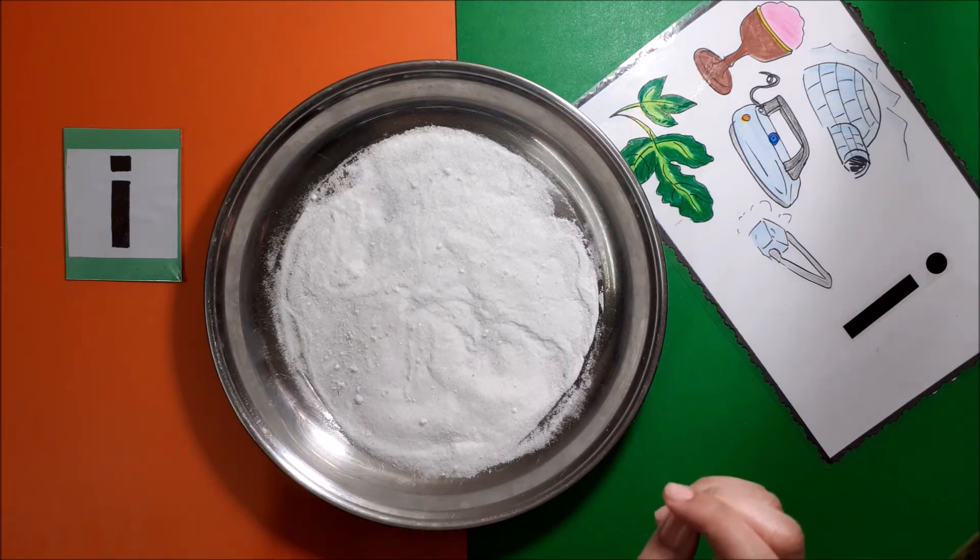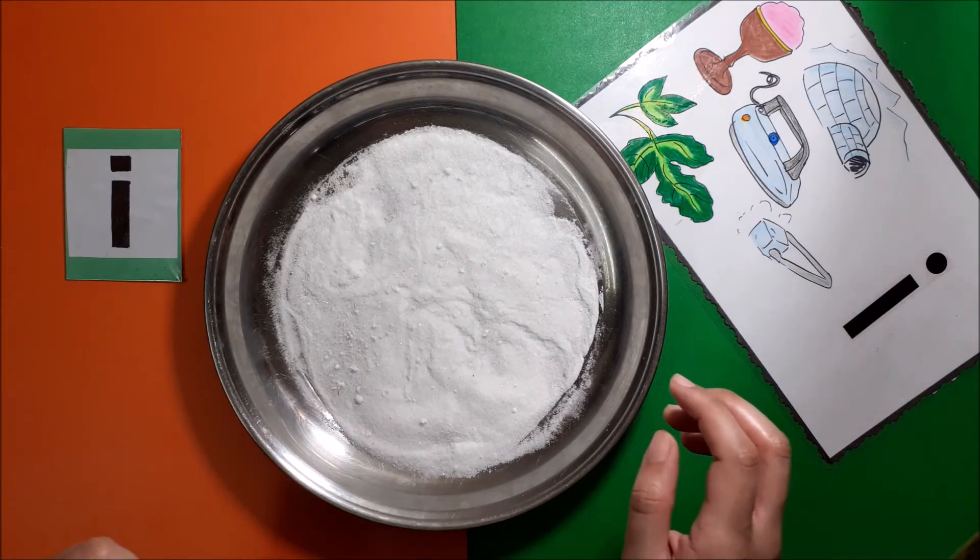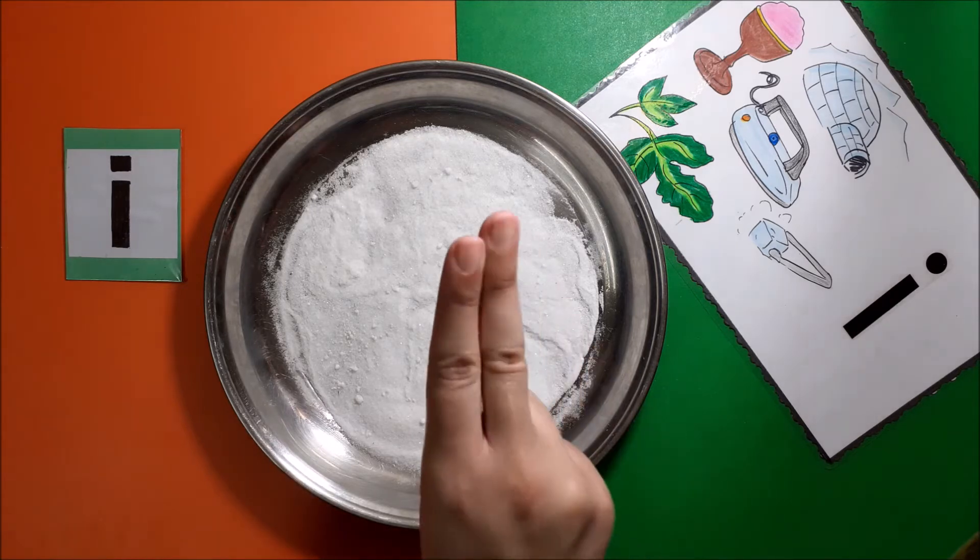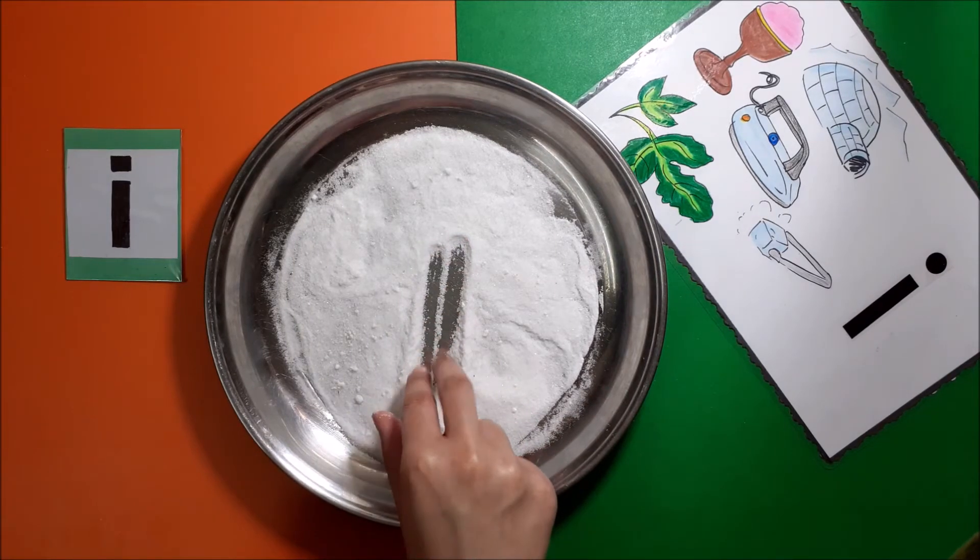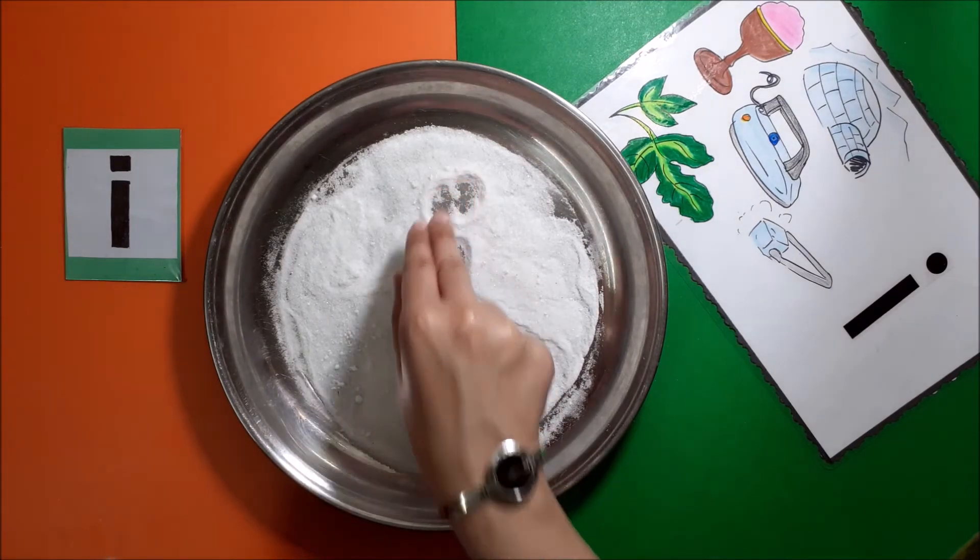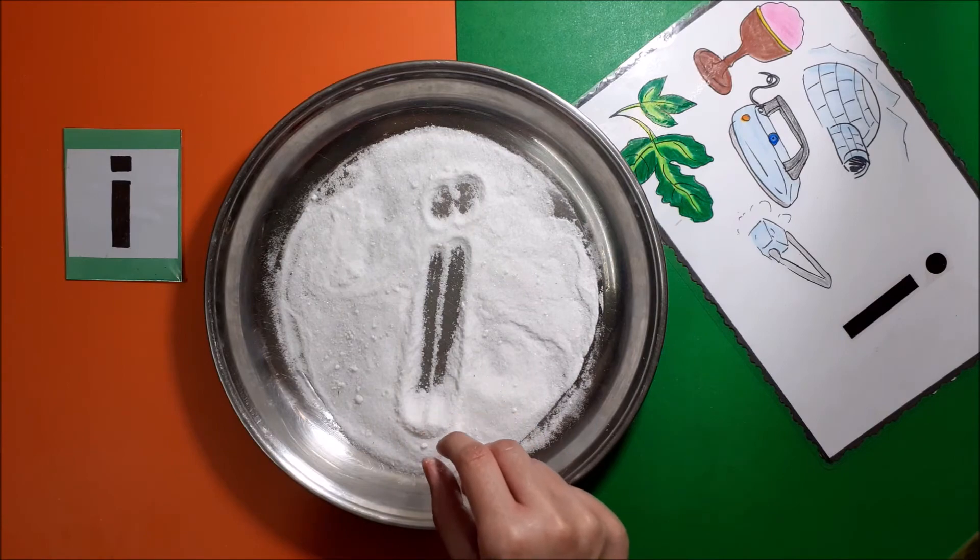The phonic that we will be doing today is I. Use two fingers joined together to make a straight line. Then go up and put a dot on top. Very good!